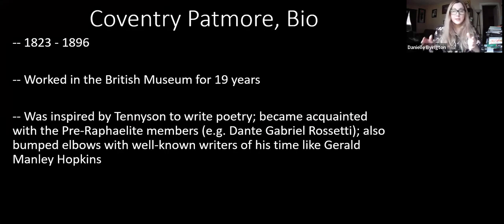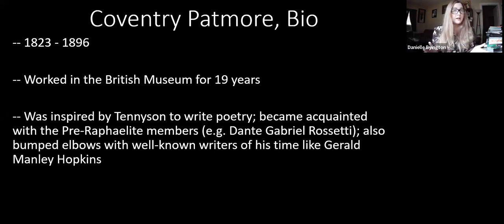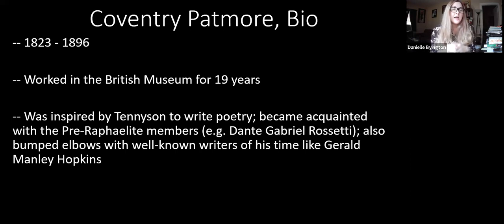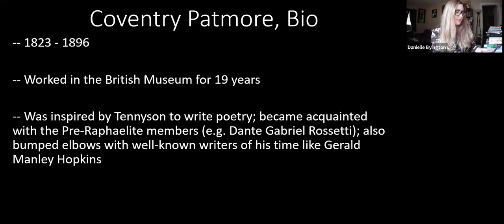Patmore was in the circle of all the other famous writers of his time. He was inspired by Tennyson — we've talked about Alfred Tennyson, specifically his poem The Lady of Shalott. Patmore would have also known many of the people in the pre-Raphaelite circle, including Dante Rossetti, and also would have bumped elbows with other contemporary famous writers like Gerard Manley Hopkins. Before his poetry more or less takes off, he worked in the British Museum for 19 years, doing that by day and writing in his free time when he came home from work.